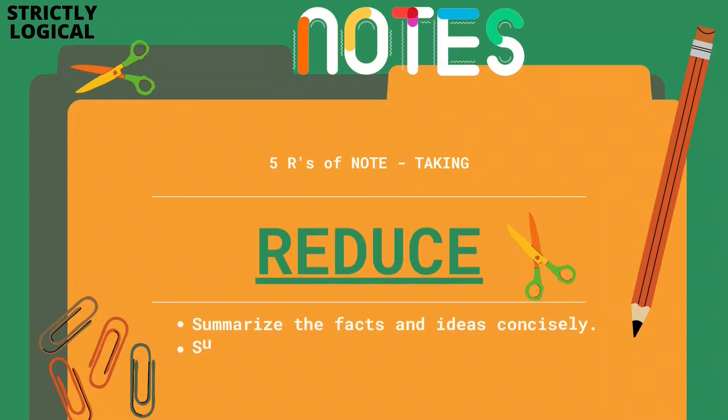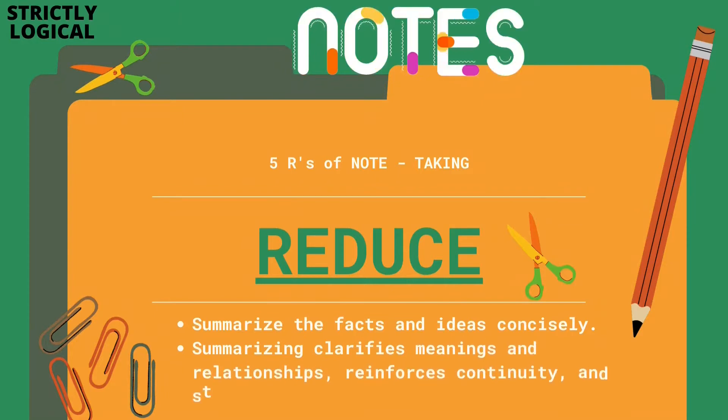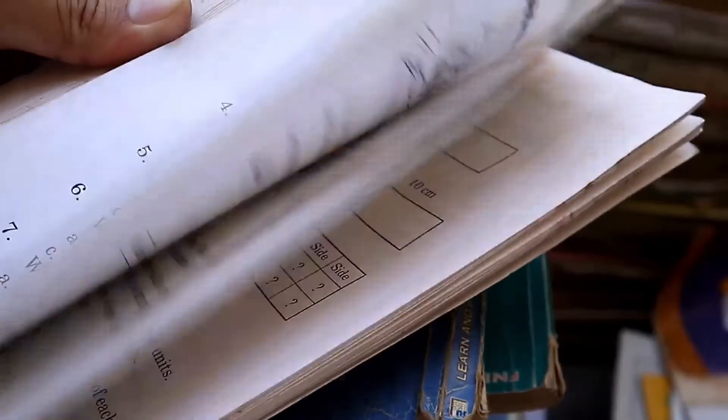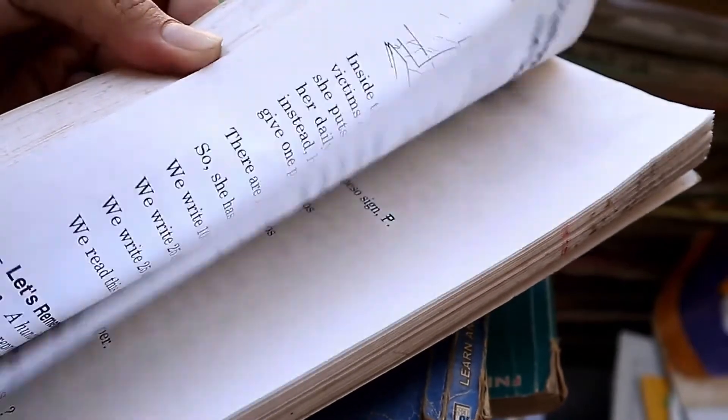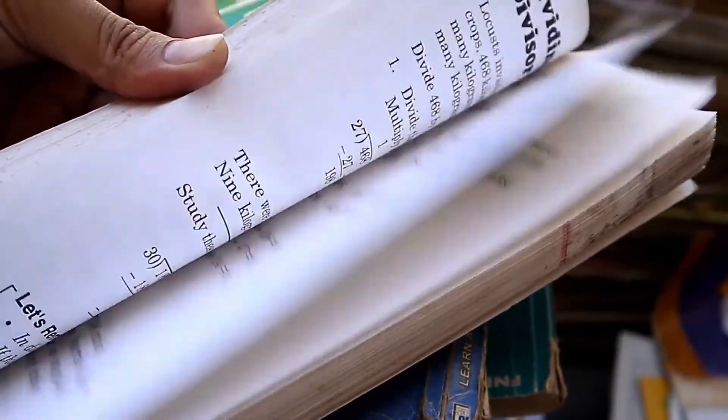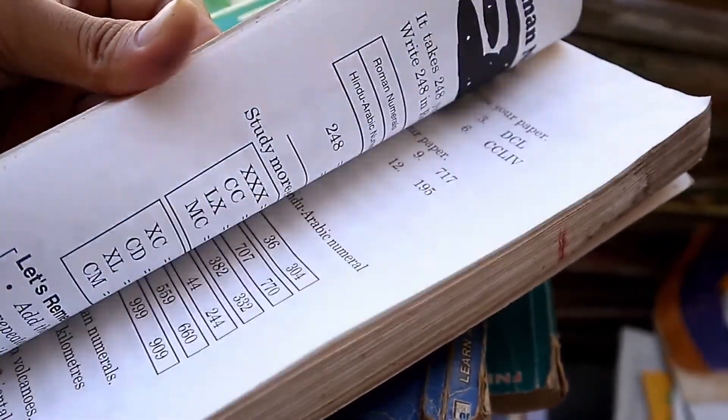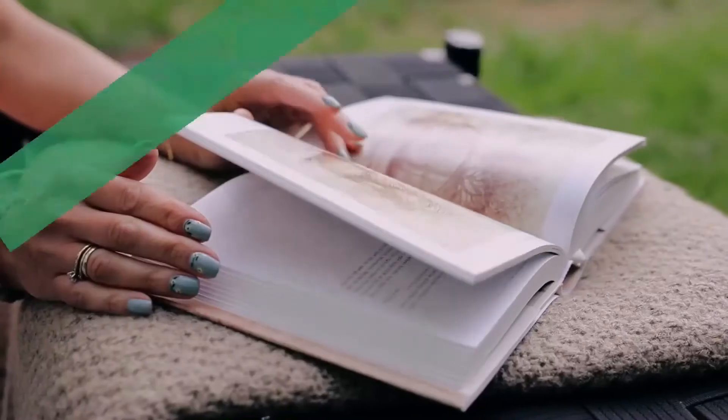Now the next R is for reduce. Reduce means whatever you have studied in 30 to 45 minutes or in the textbook 10 to 15 pages, you have to summarize and reduce. The reduction process starts at the end of the lecture or when you have completed the whole chapter.